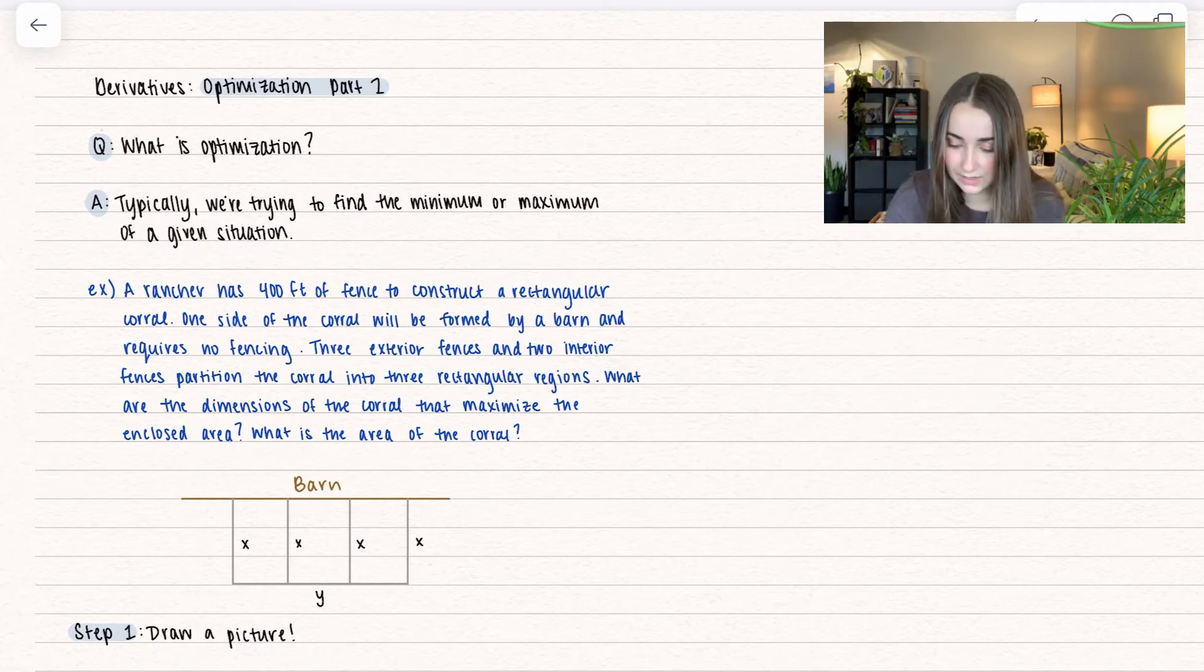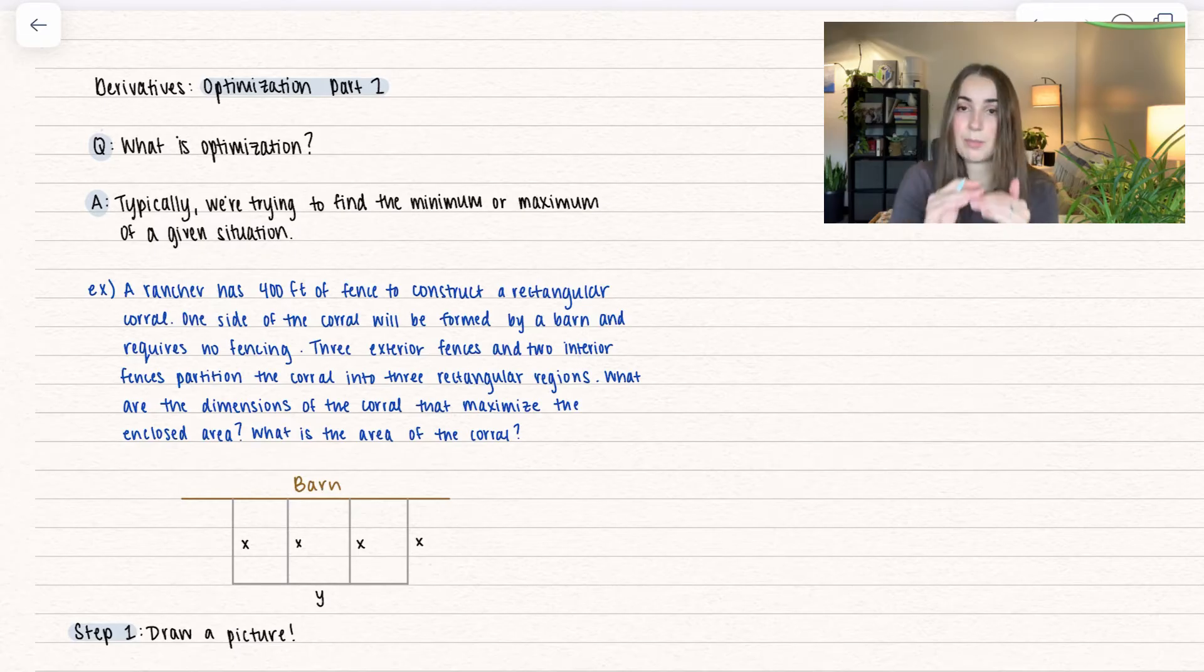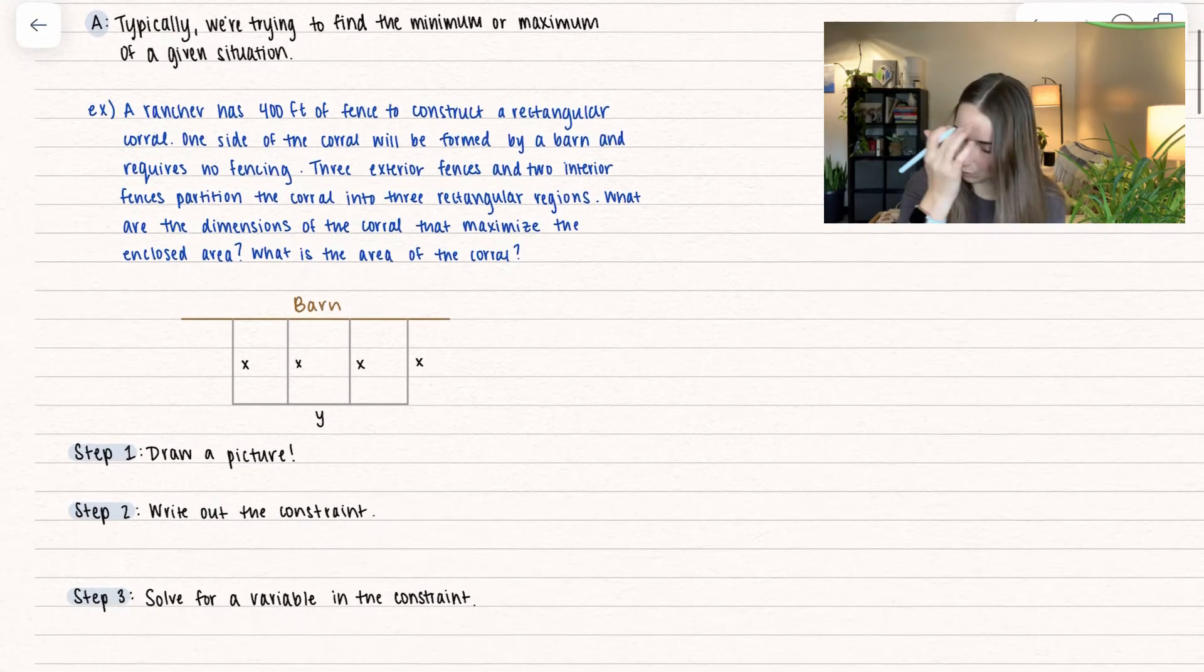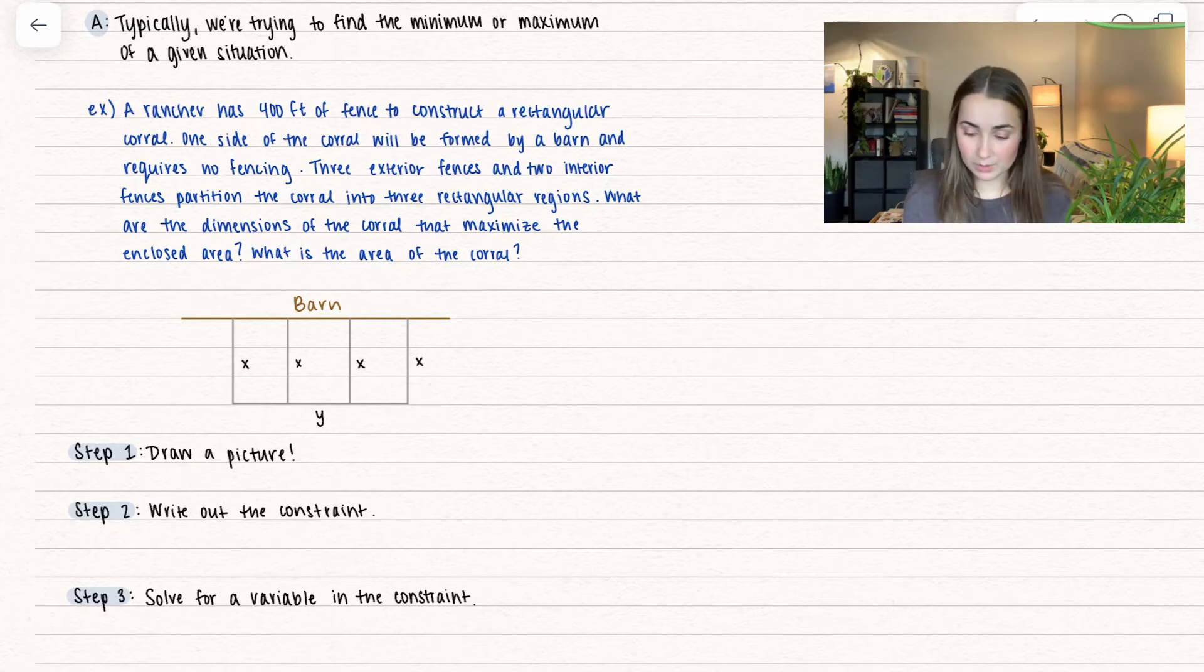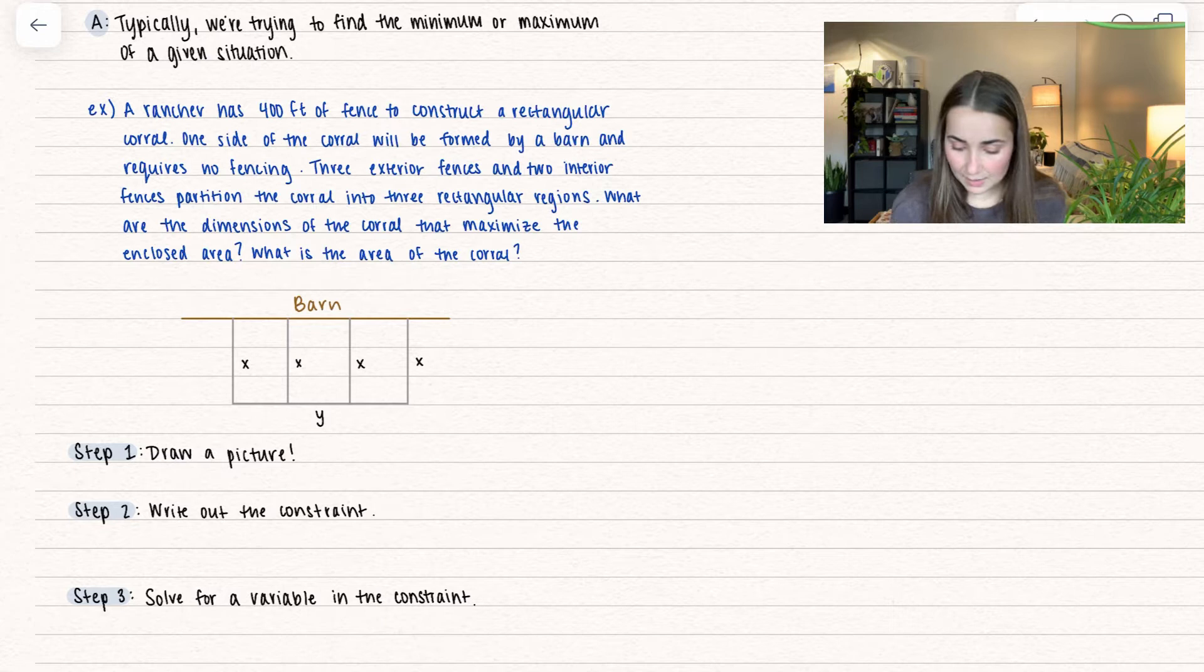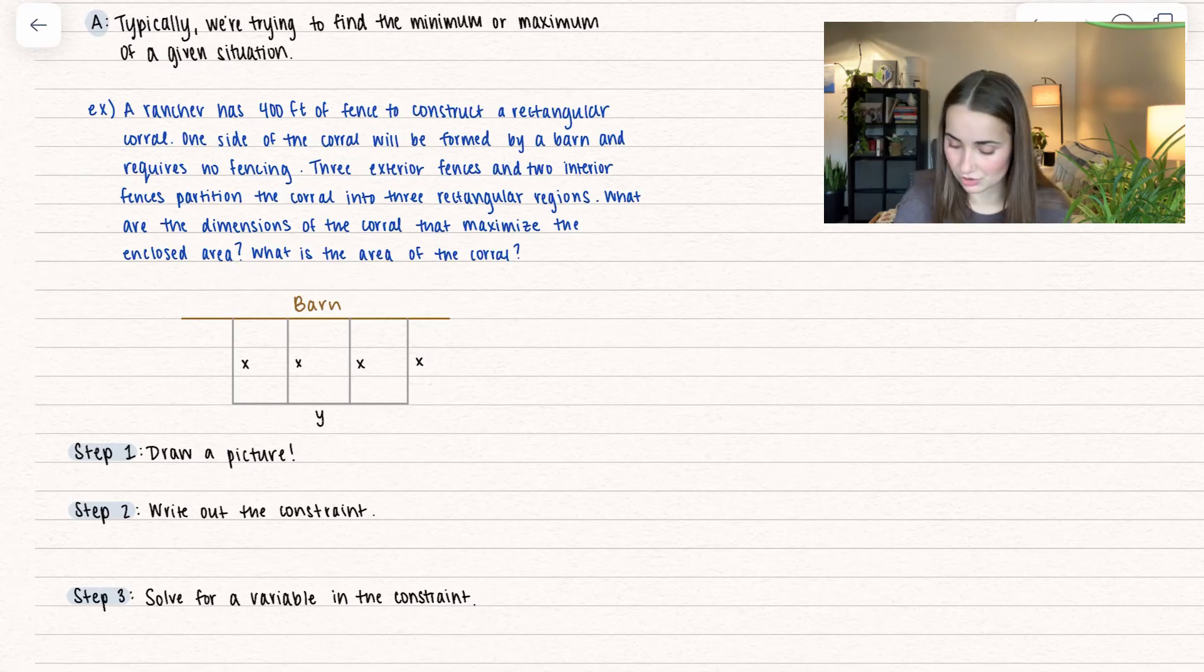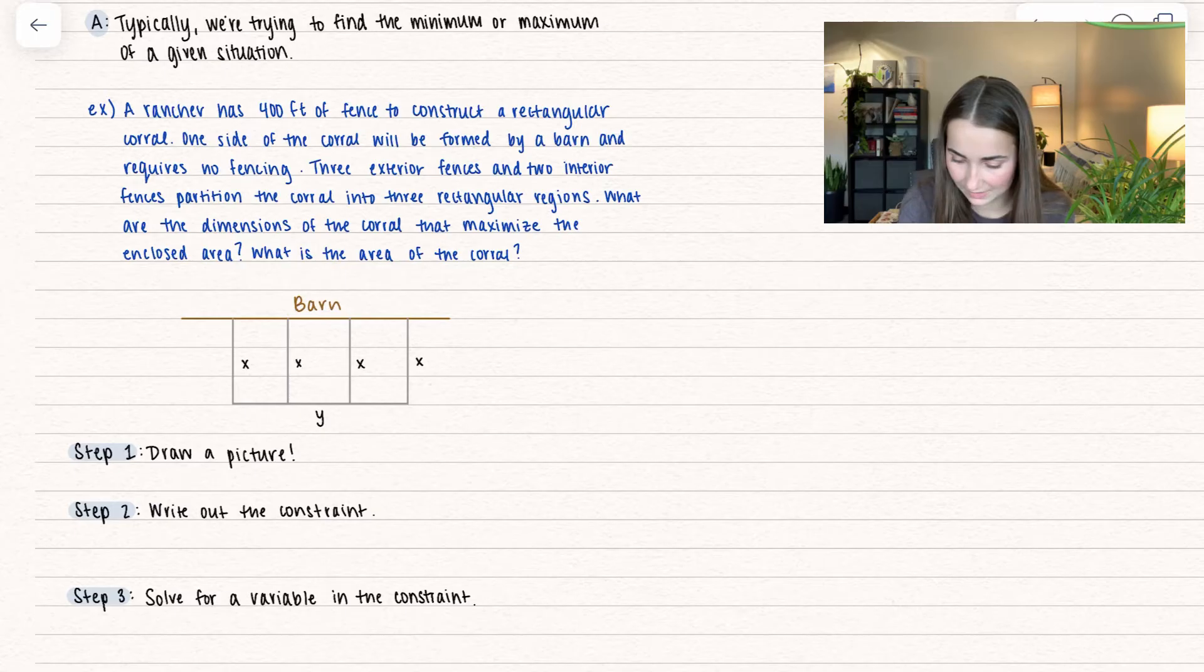This problem provides a picture. We have the barn forming one side with the following sides labeled as X and Y. In optimization problems, we always try to draw a picture to understand the problem. Our next step is to write out the constraint - something we are stuck with that cannot change. In our case, the constraint is we have 400 feet of fencing.